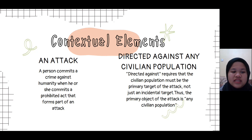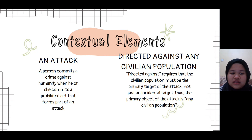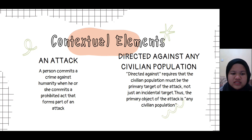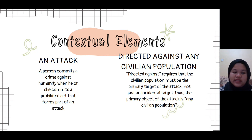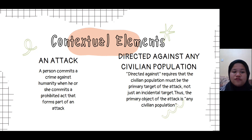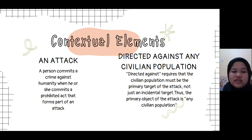Another important distinction is that in the case of crimes against humanity, it is not necessary to prove that there is an overall specific intent. It is sufficient for there to be simple intent to commit any of the listed acts, with the exception of the act of persecution, which requires additional discriminatory intent. The perpetrator must also act with knowledge of the attack against the civilian population and that his or her action is part of the attack.